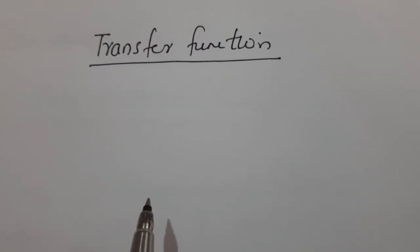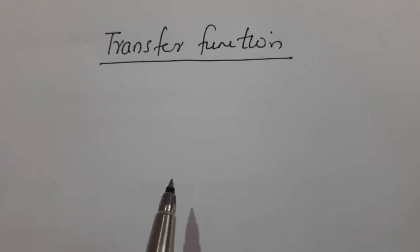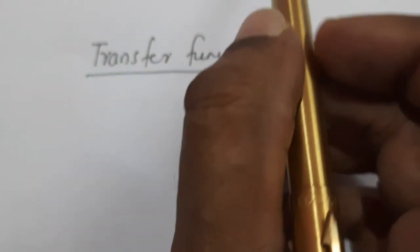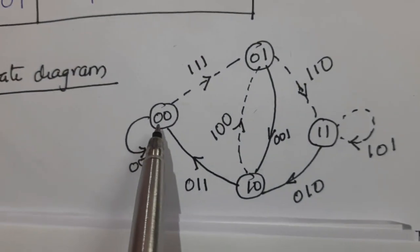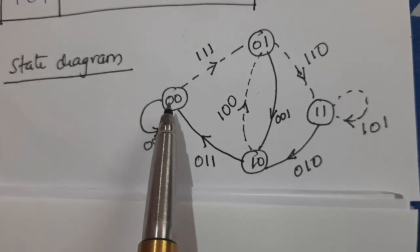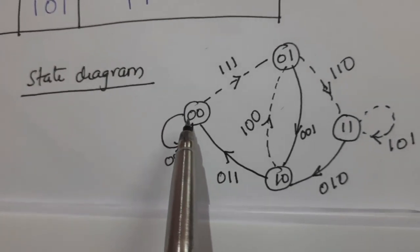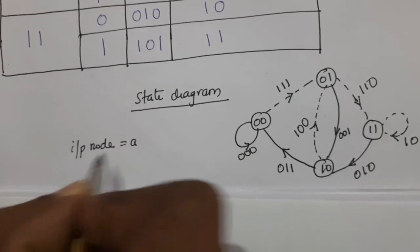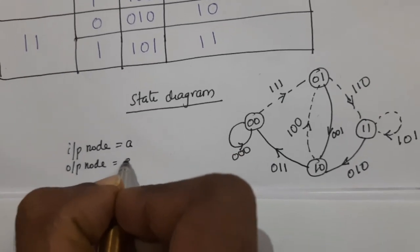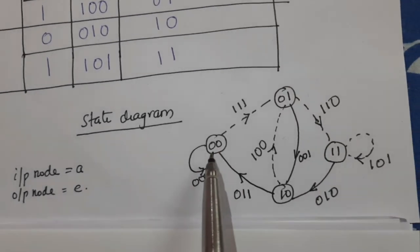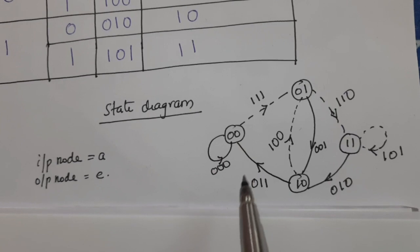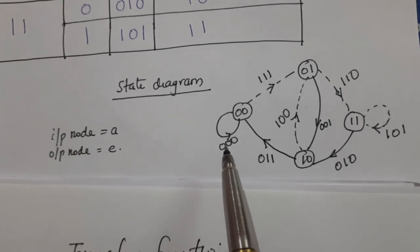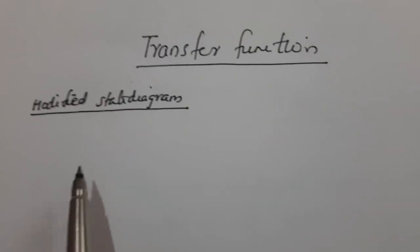In order to find d_free, we need to find the transfer function. The transfer function can be found with the help of a modified state diagram. To draw the modified state diagram, node A (state 00) is split into two nodes: an input node A and an output node E.